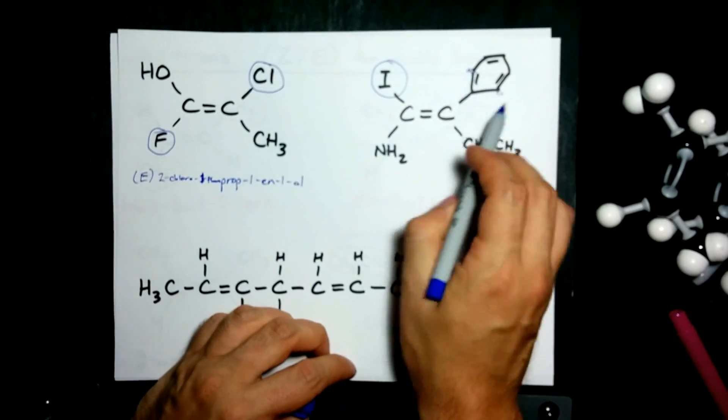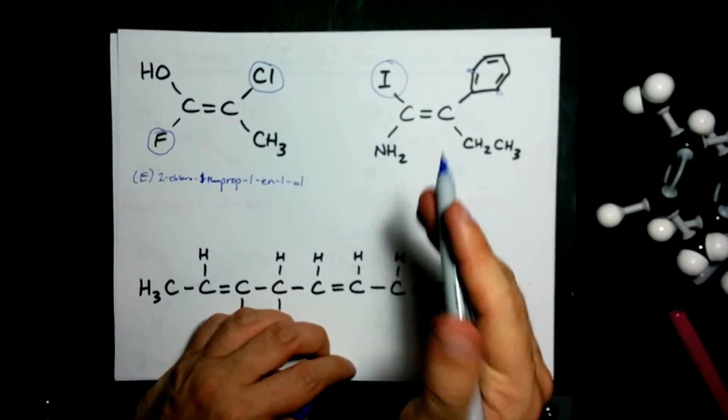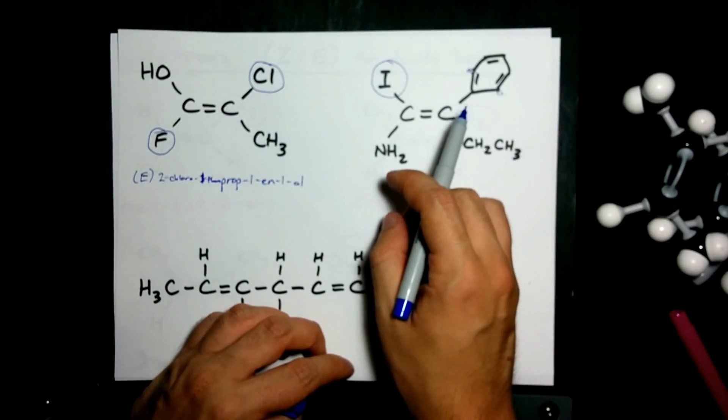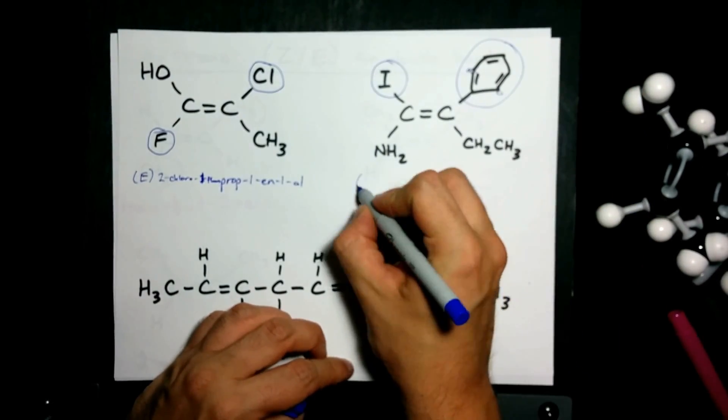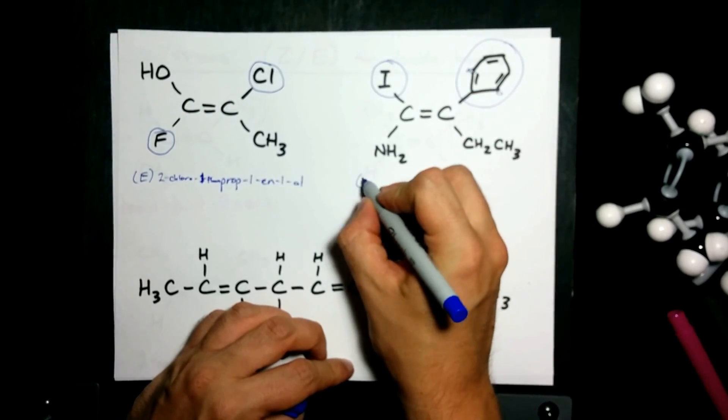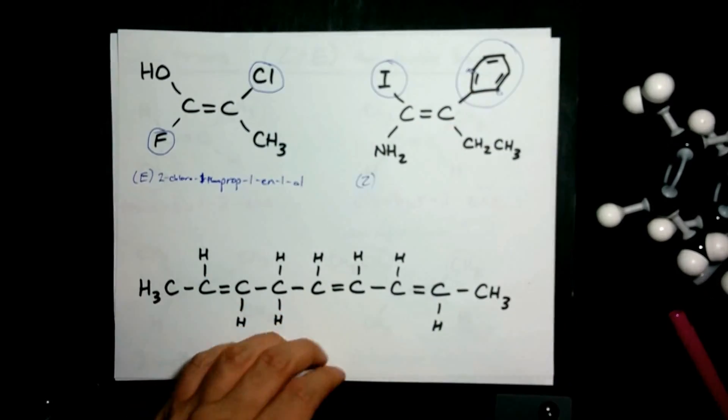In any case, those extra three carbons at the, you know, second bond away from the central carbon beats out the ethyl group. These are on the same side so we call it Z. And I am certainly not naming this.